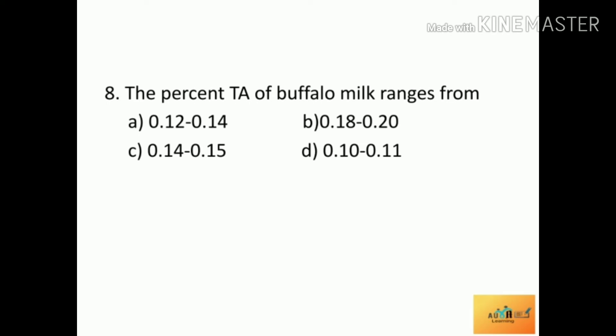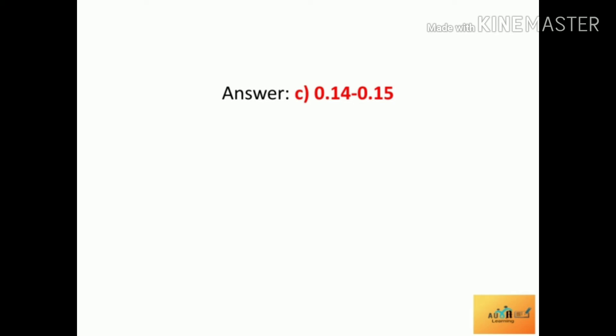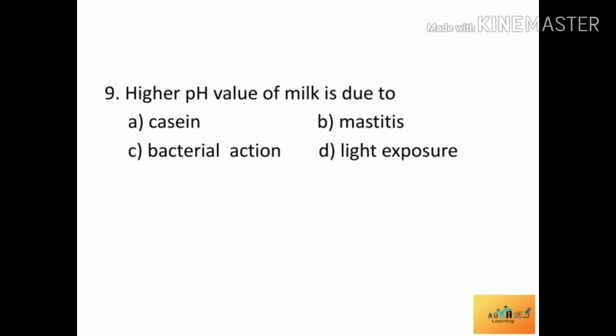Next question: The percent titratable acidity of buffalo milk ranges from — Option A: 0.12 to 0.14, Option B: 0.18 to 0.20, Option C: 0.14 to 0.15, Option D: 0.20. The correct answer is 0.14 to 0.15. The titratable acidity of cow milk is 0.13 to 0.14 percent, while the titratable acidity of buffalo milk is 0.14 to 0.15 percent.